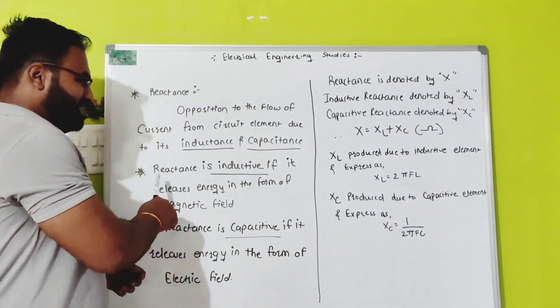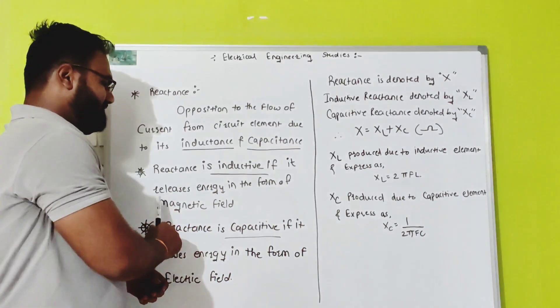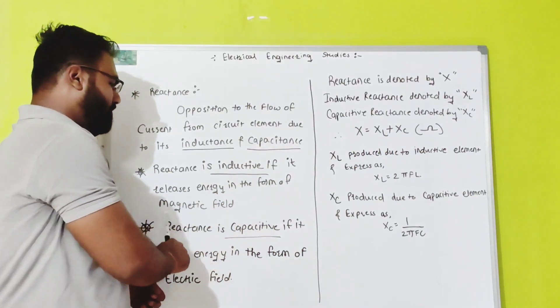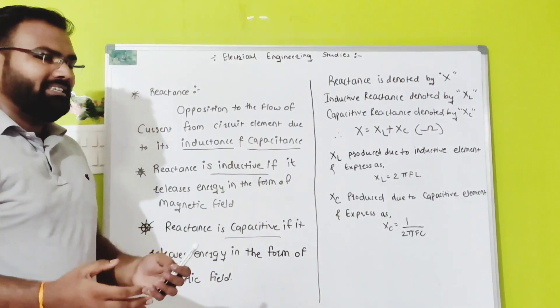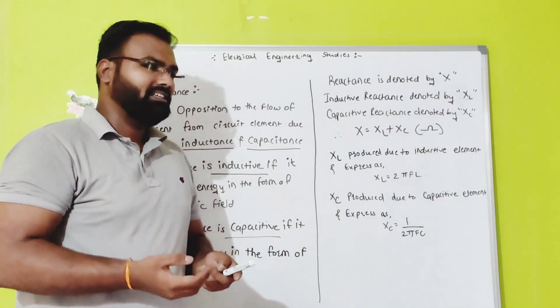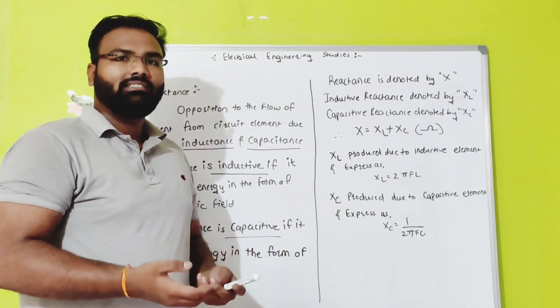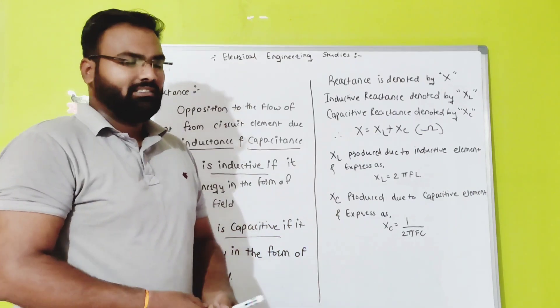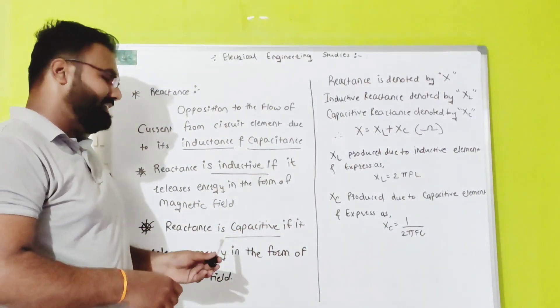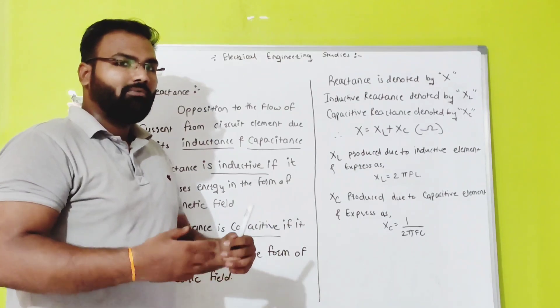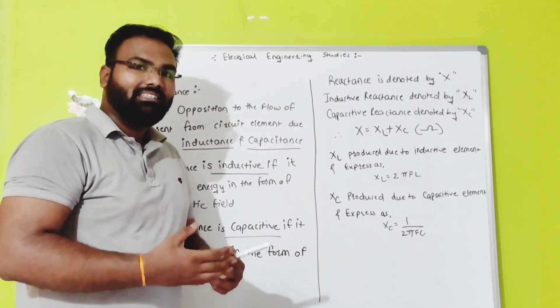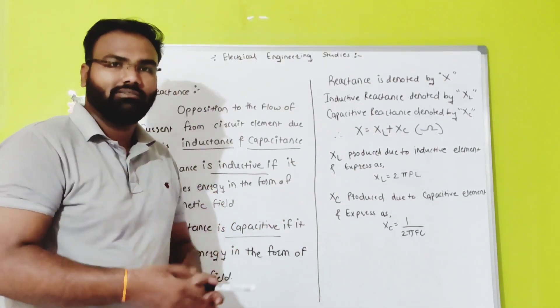Now see here. Reactance is inductive if it releases energy in the form of magnetic field. We can say that when we get reactance in the form of magnetic field, it is nothing but the inductive reactance. And when it releases energy in the form of electric field, we can say that the reactance is nothing but a capacitive reactance.